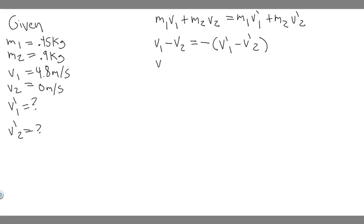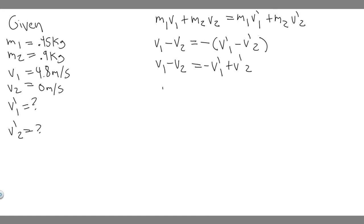Starting with equation two: v₁ - v₂ = -v'₁ + v'₂, since expanding the negative gives minus v'₁ plus v'₂. Moving v'₂ to the other side, we get v'₂ = v'₁ + v₁ - v₂. Since v₂ = 0, this simplifies to v'₂ = v'₁ + v₁. We'll take this formula and plug it into equation one.